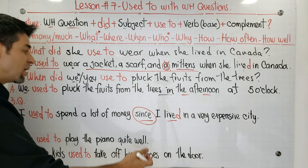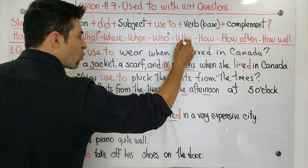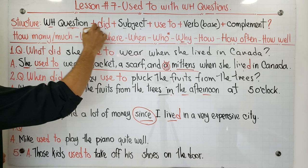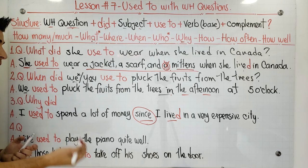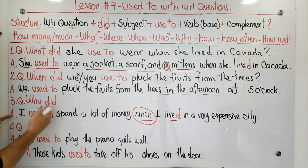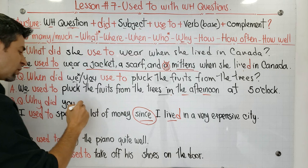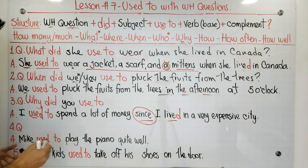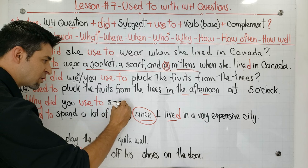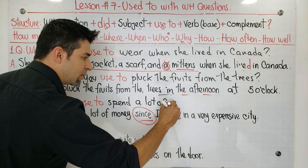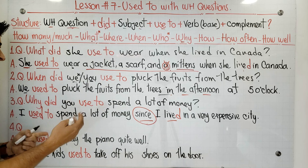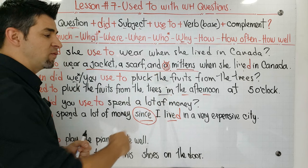The corrected sentence means: I used to spend a lot of money because I lived in a very expensive city. The word 'since' is used to give an argument or reason. The WH question to use here is 'why,' because we're asking for a reason. Structure: Why — did — you — used to — verb in base form. So: Why did you used to spend a lot of money?